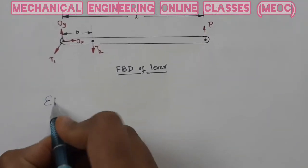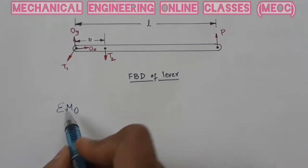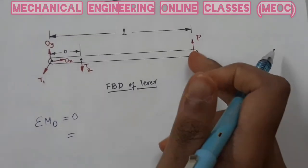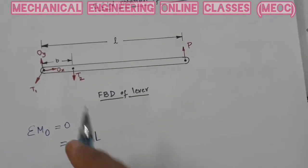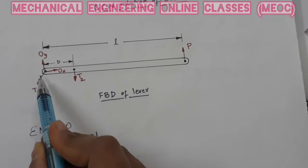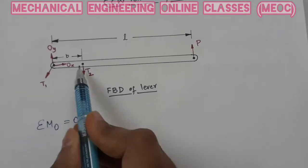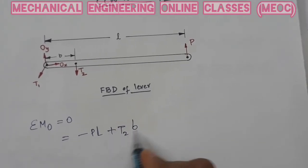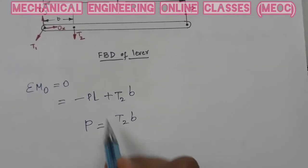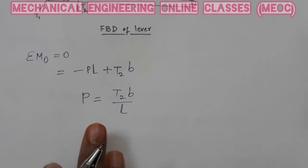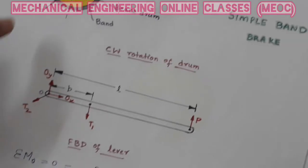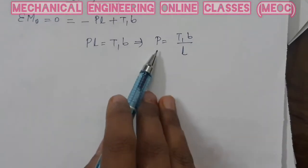For the FBD of the lever in the anticlockwise case, T1 passes through O (moment of T1 about O is zero), and T2 is at distance B from O. Taking moments about O for equilibrium, with anticlockwise as negative: minus P into L plus T2 into B equals zero. Therefore, P equals T2 times B divided by L. So when the drum rotates anticlockwise, the applied force is T2B/L, and when it rotates clockwise, the applied force is T1B/L.